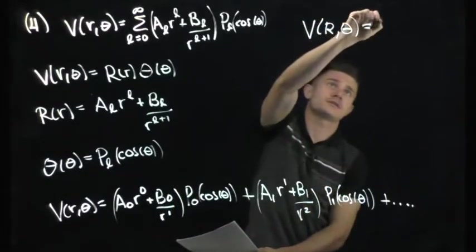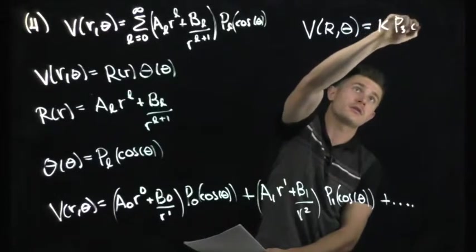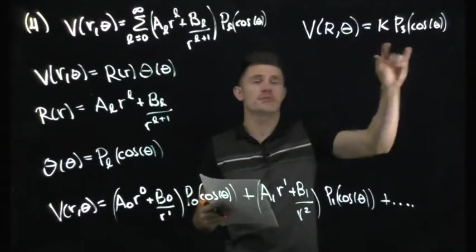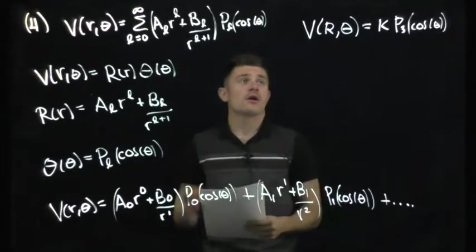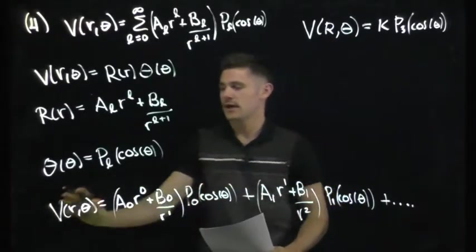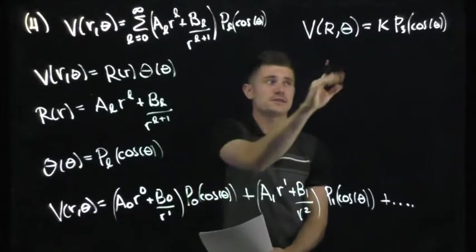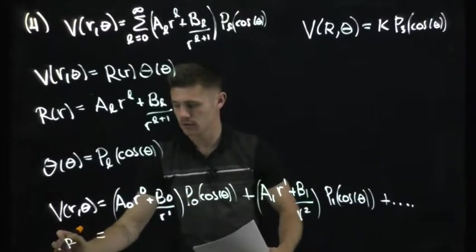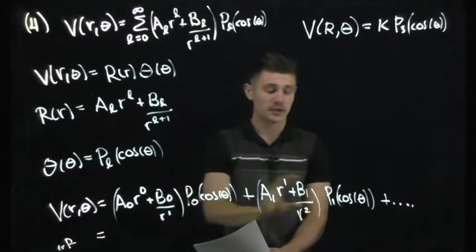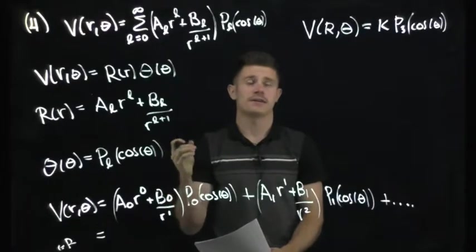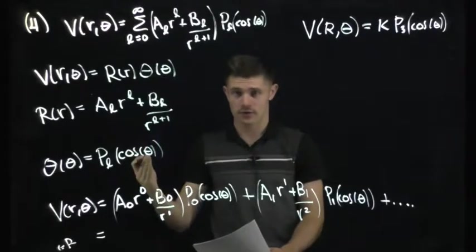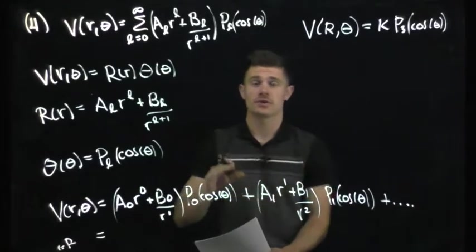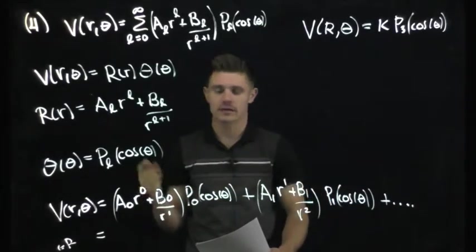The boundary condition is V(R, θ) = K·P₃(cosθ). So at the boundary we must have constant K multiplied by the L=3 Legendre polynomial. This means in the entire sum, only the L=3 term appears. Due to the orthogonality of Legendre polynomials — when L ≠ L', the integral goes to 0, as we found in question 2 — we only end up with the L=3 term remaining.